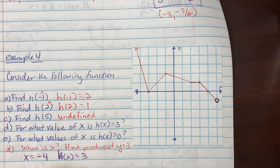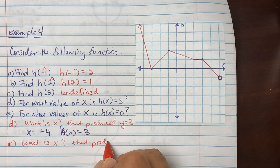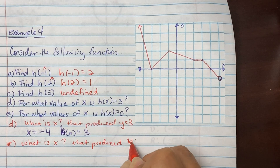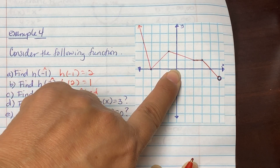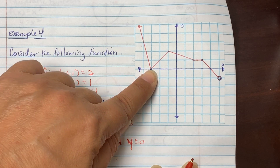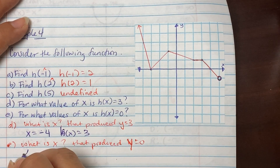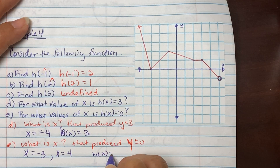For e, we want the x that produced y = 0. A y value of zero means it didn't leave the x-axis. Looking at the graph, the function crosses zero at x = −3 and x = 4. So when x = −3 and x = 4, h(x) = 0.